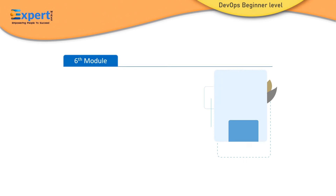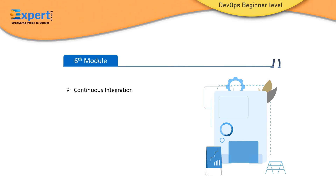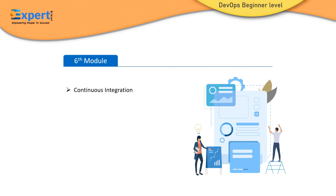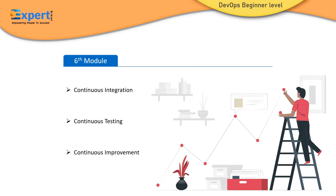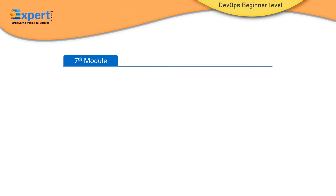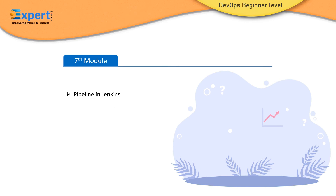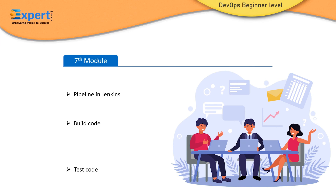In the sixth module, you will learn about continuous integration, continuous testing, and continuous improvement. The seventh module will discuss pipeline and Jenkins, build code, and test code.